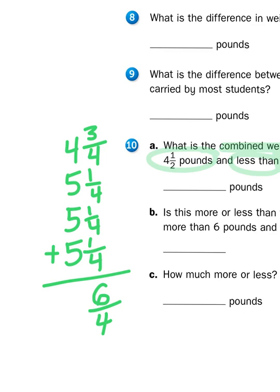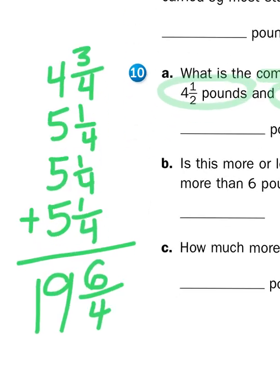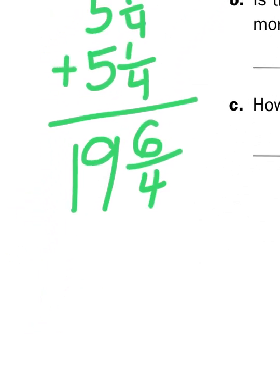Then I'm going to add my whole number pounds. So four plus five plus five plus five. Well, three fives is fifteen, fifteen plus another four would give me nineteen. So my raw data added together is nineteen and six fourths. Well, I can't have a mixed number with an improper fraction. So what I have to do is I need to change that improper fraction up.